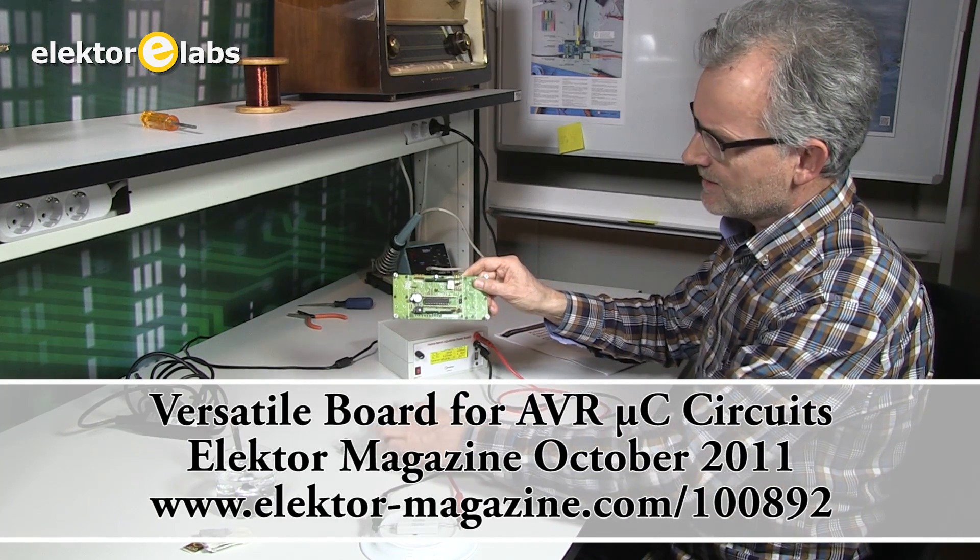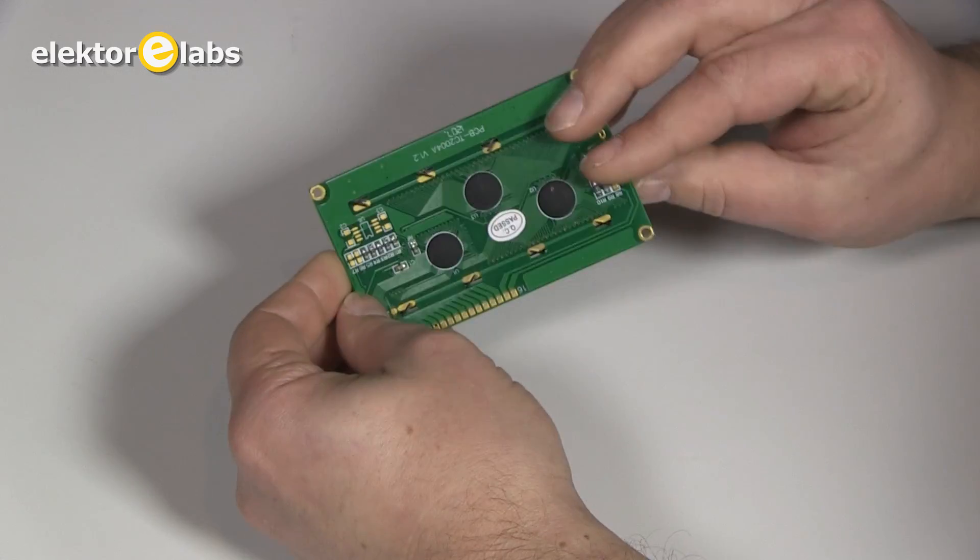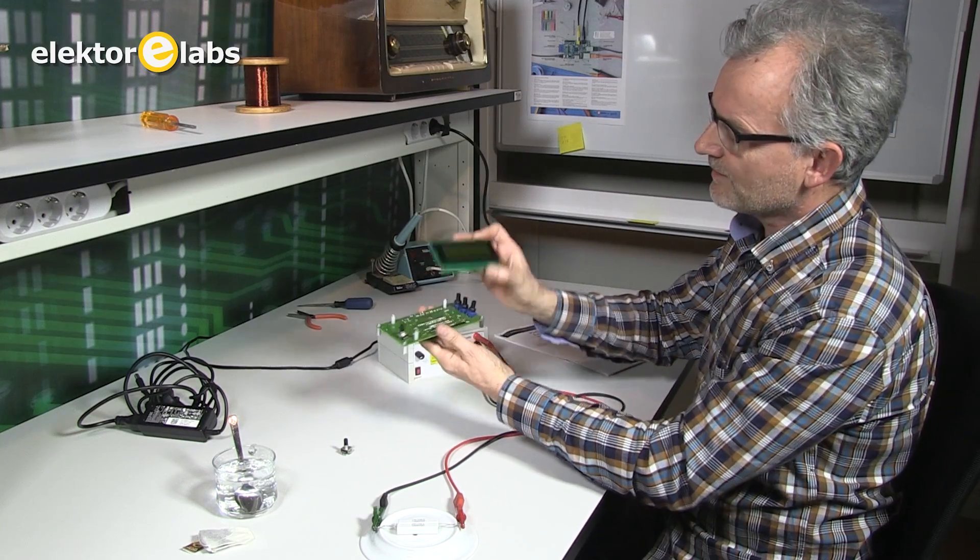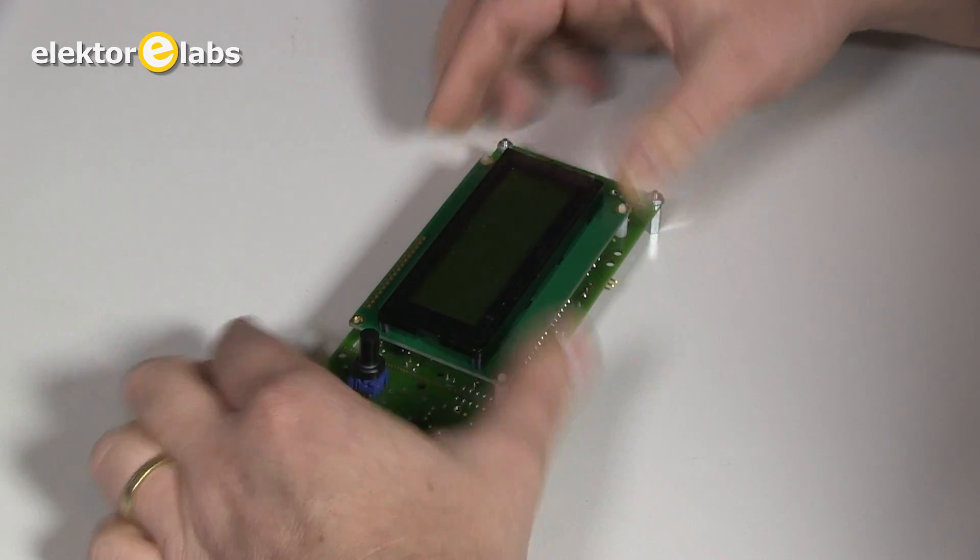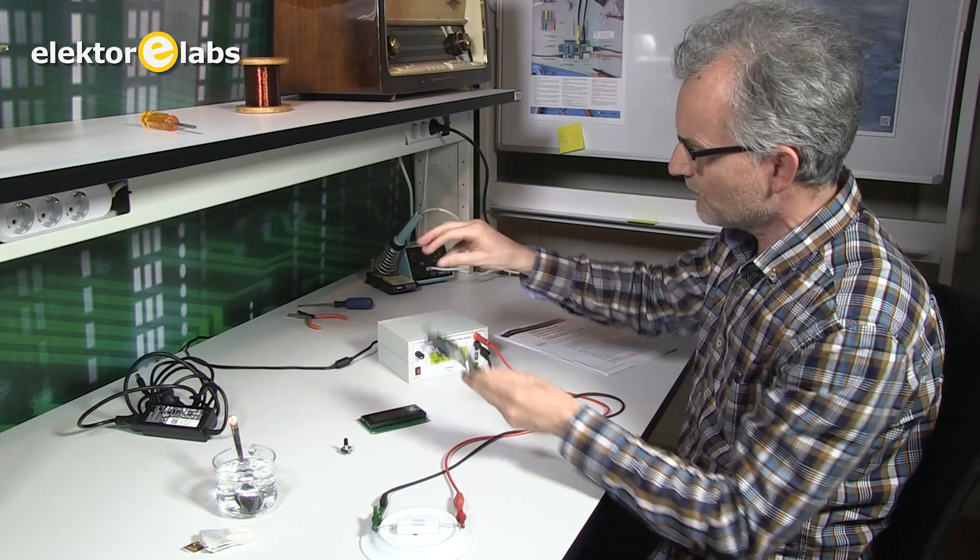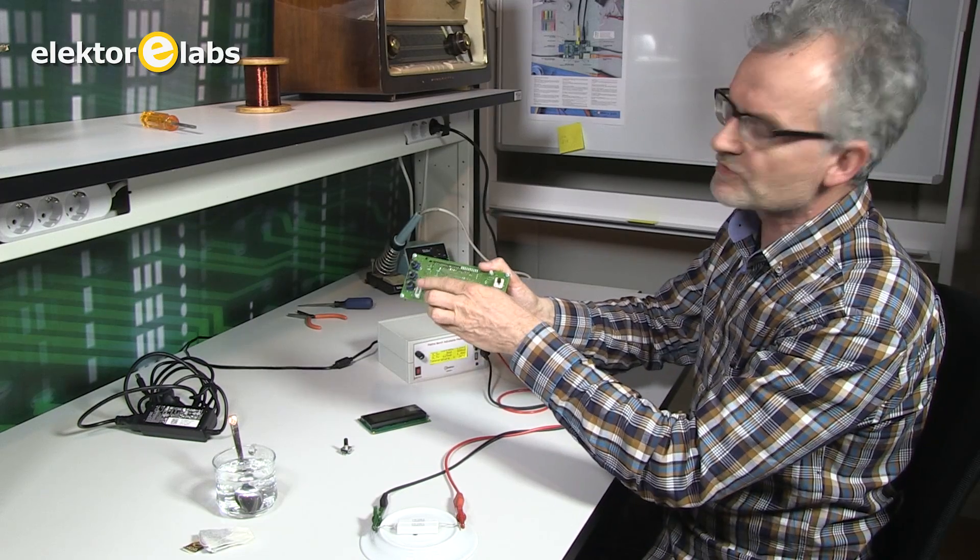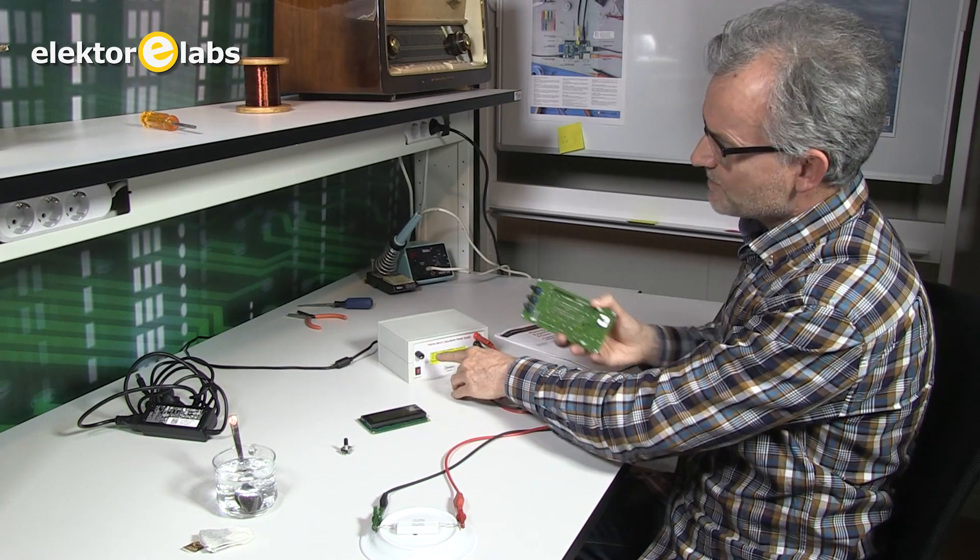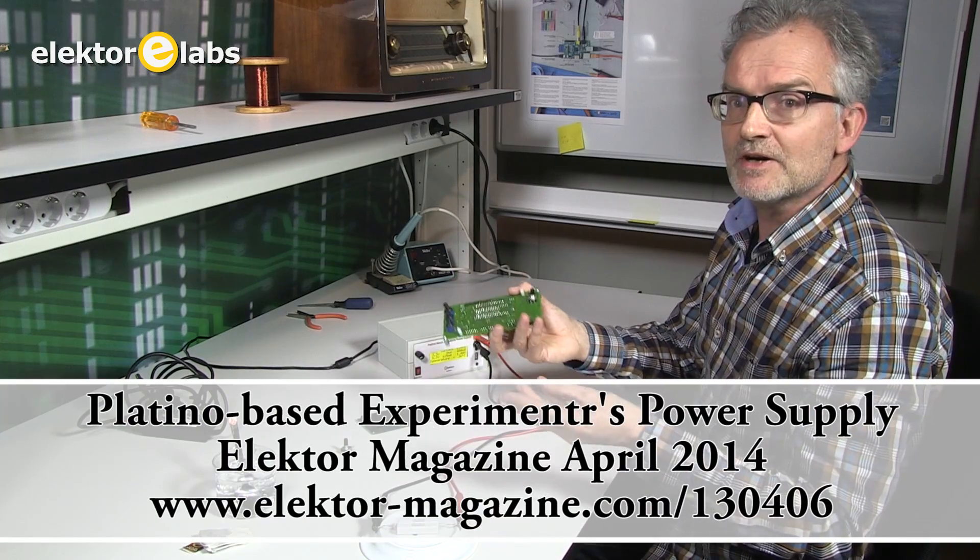It has a 20 character, four line display mounted on the board at this side. You don't have to populate the board entirely for this particular application. The original version of Platino has three controls, but for this particular power supply we've only got one. There's information in the article on how to build your Platino and configure it for this application.